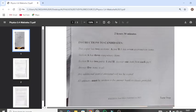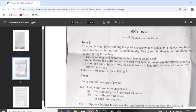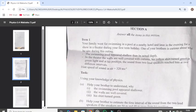Let's go direct to the questions. Question A - Section A is always a compulsory section and we have to answer all items. Item 1 says that your family went for swimming in a swimming pool at a nearby hotel and later in the evening for a show in a theater during the first time. One of your brothers is curious about what he saw during this outing.